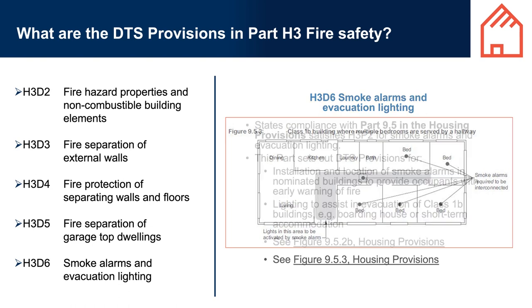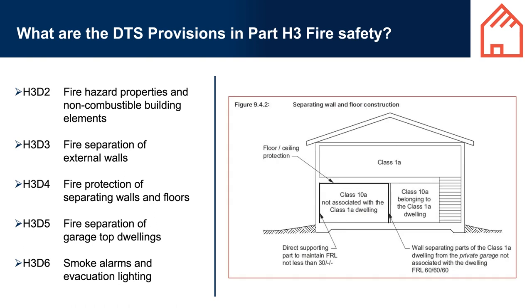Figure 9.5.2b of the Housing Provisions illustrates an example of how smoke alarms should be located in a Class 1a building where bedrooms are in separate areas. Figure 9.5.3 illustrates an example for a Class 1b building where bedrooms are in the same area. Figure 9.4.2 illustrates an example of separating wall and floor construction for a Class 1a and Class 10a building and requirements for fire protection.